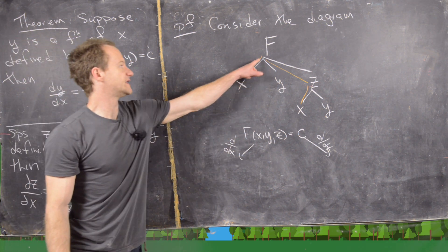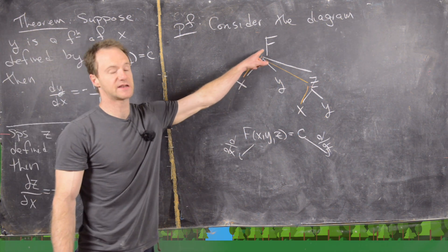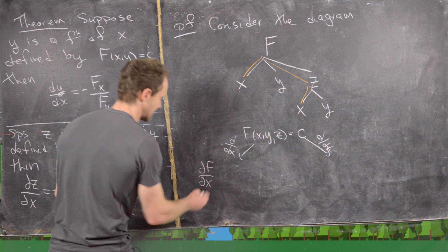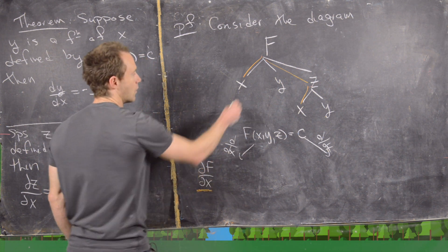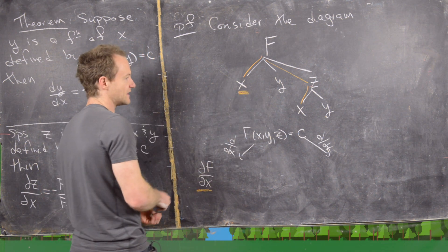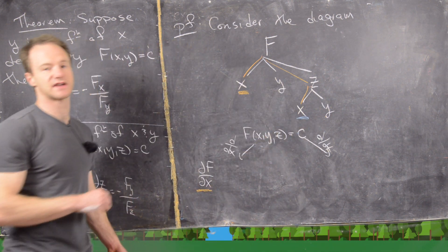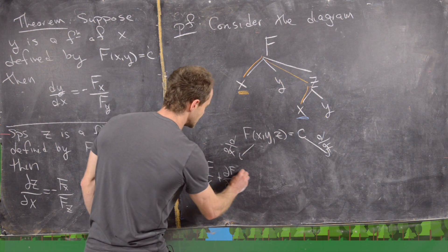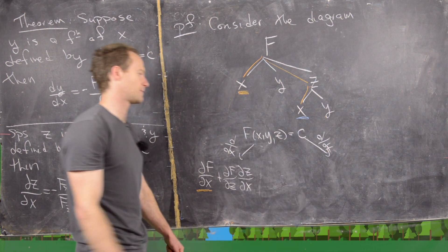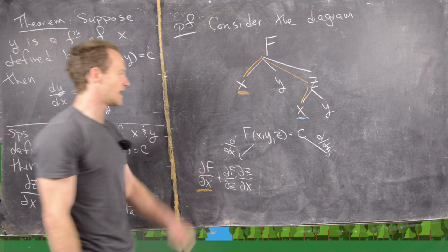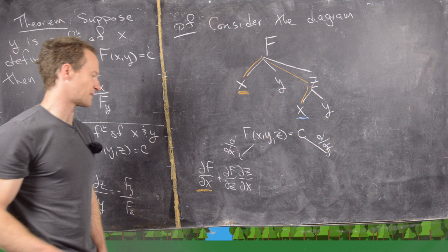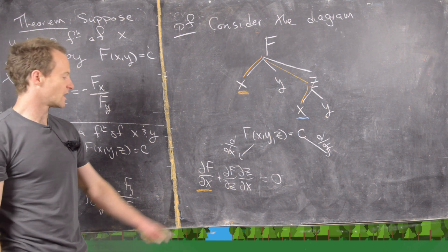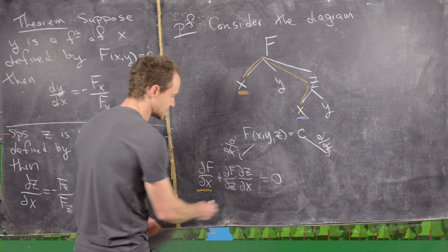Using the chain rule, we need to take two paths from the top — which is F — down to the bottom, which is x. The first path gives the partial of F with respect to x directly. The second path goes down through z, giving plus the partial of F with respect to z times the partial of z with respect to x. On the right-hand side, the derivative of the constant with respect to x equals zero.